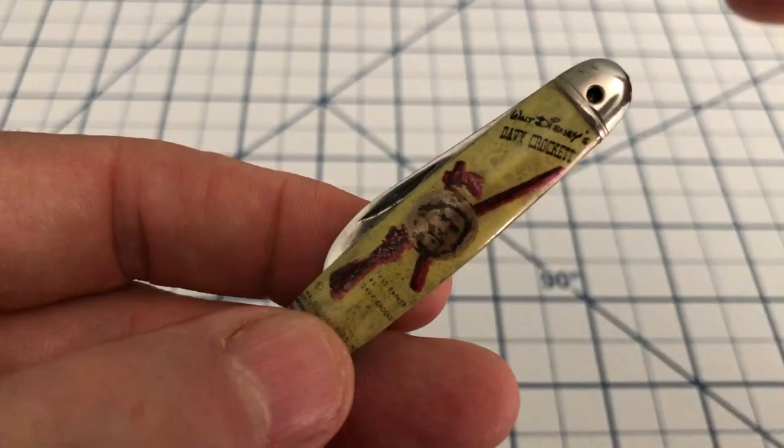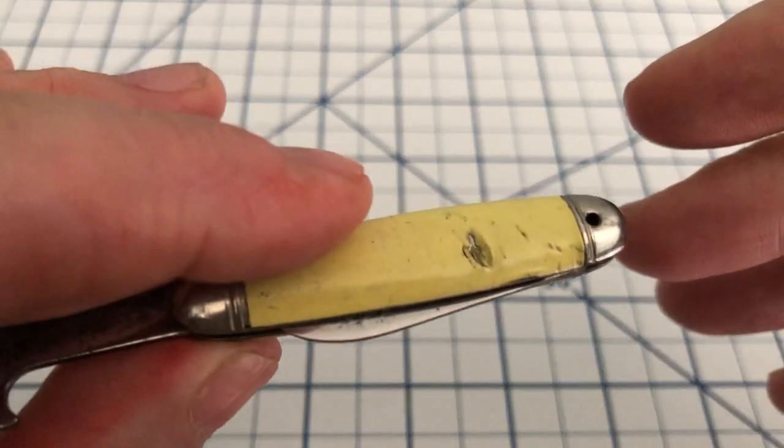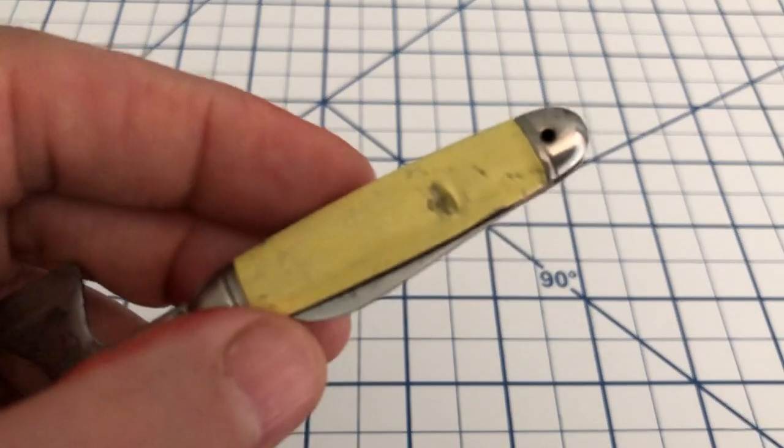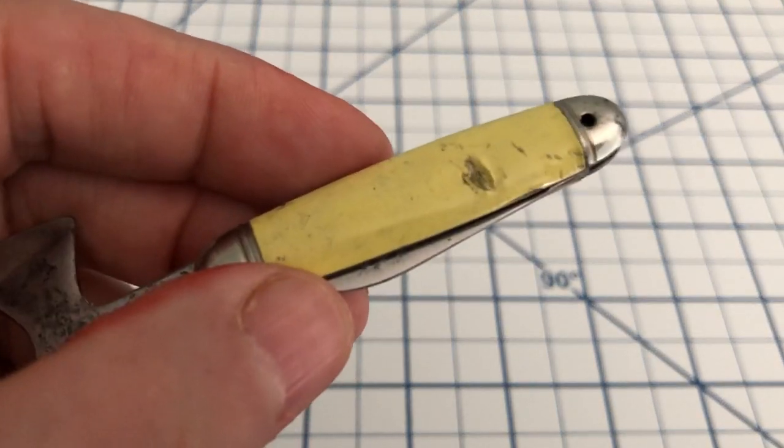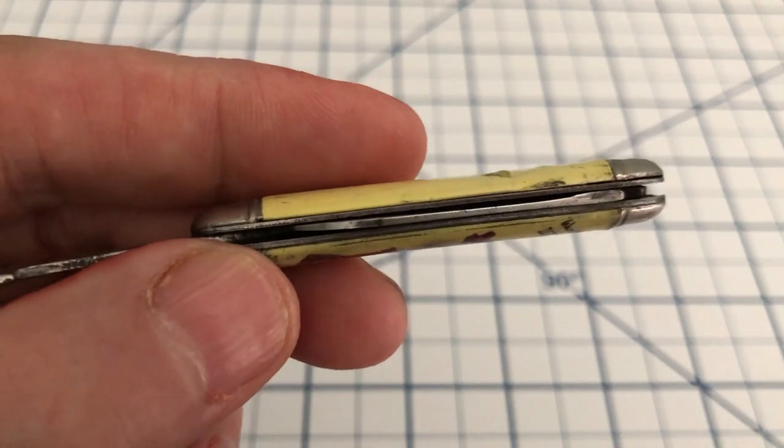Now originally this would have come with a bale. You can see that is missing on this. The back has some damage. As I say, this isn't in the world's greatest shape, but it's just a really cool piece of TV history, and so I decided that I should pick it up.